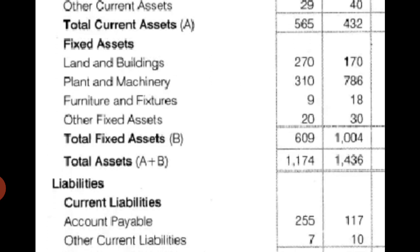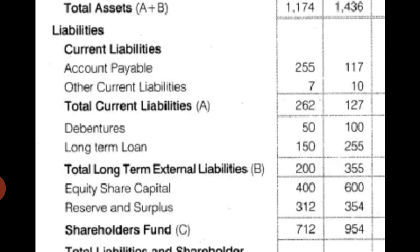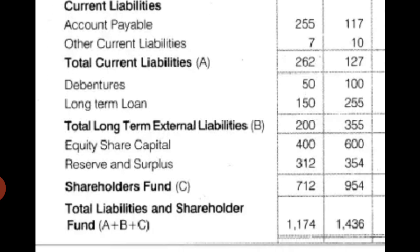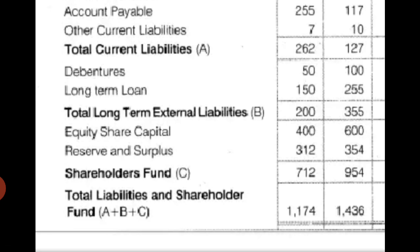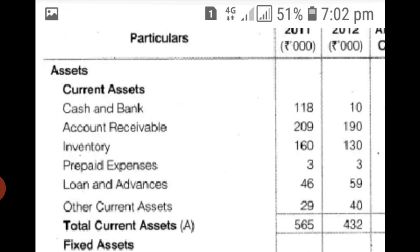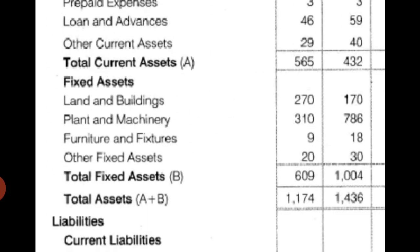On the liability side, we have current liabilities — accounts receivable and other current liabilities are shown, then total current liabilities. Then fixed liabilities — debentures, term loan, etc. — giving total long-term liabilities, total B. Third heading is equity share capital, reserves and surplus, etc., covered as shareholders' fund. The total of A, B, and C will be total liabilities. This is how we prepare a balance sheet in the new format.